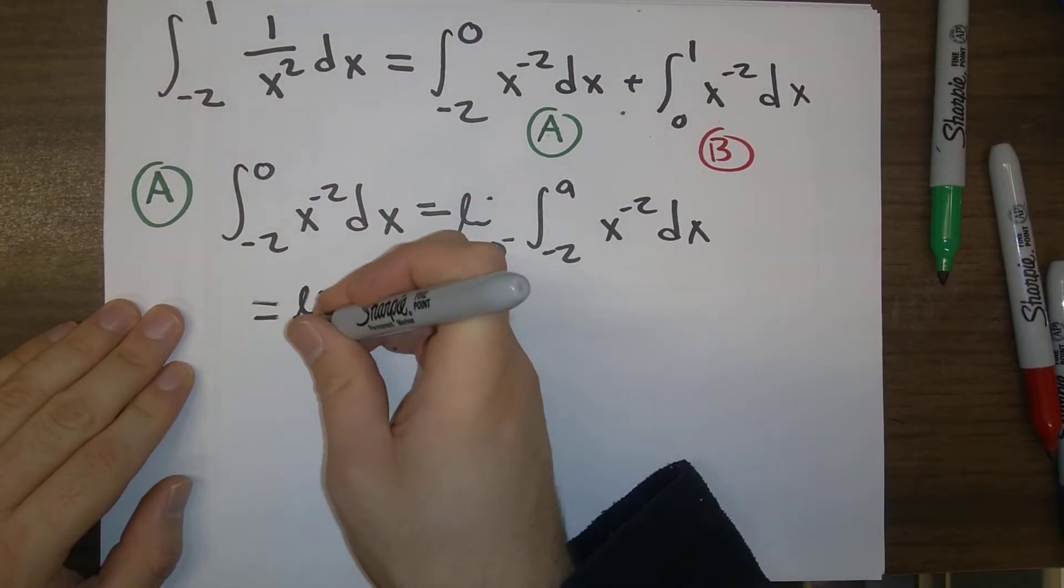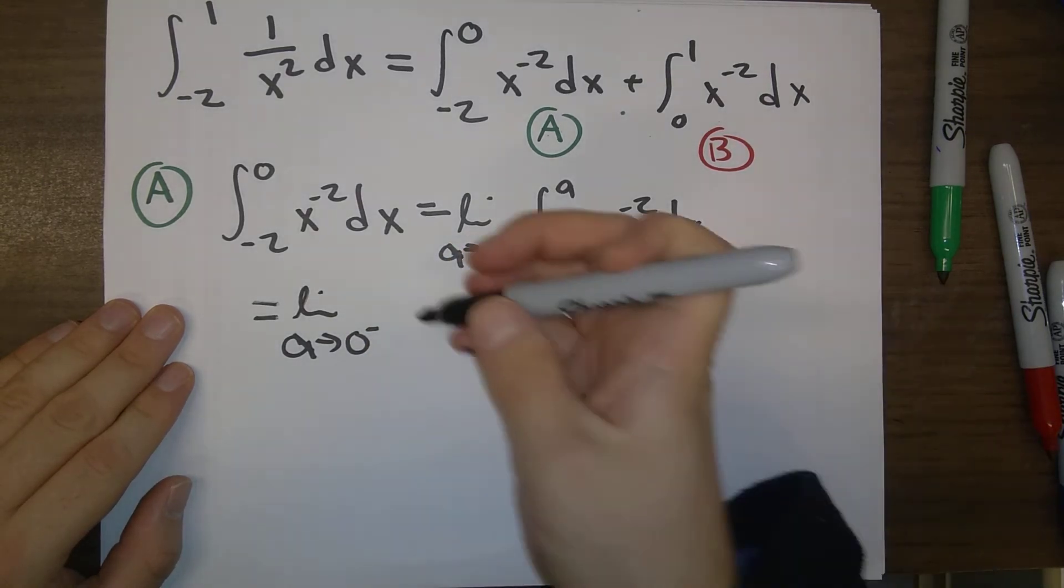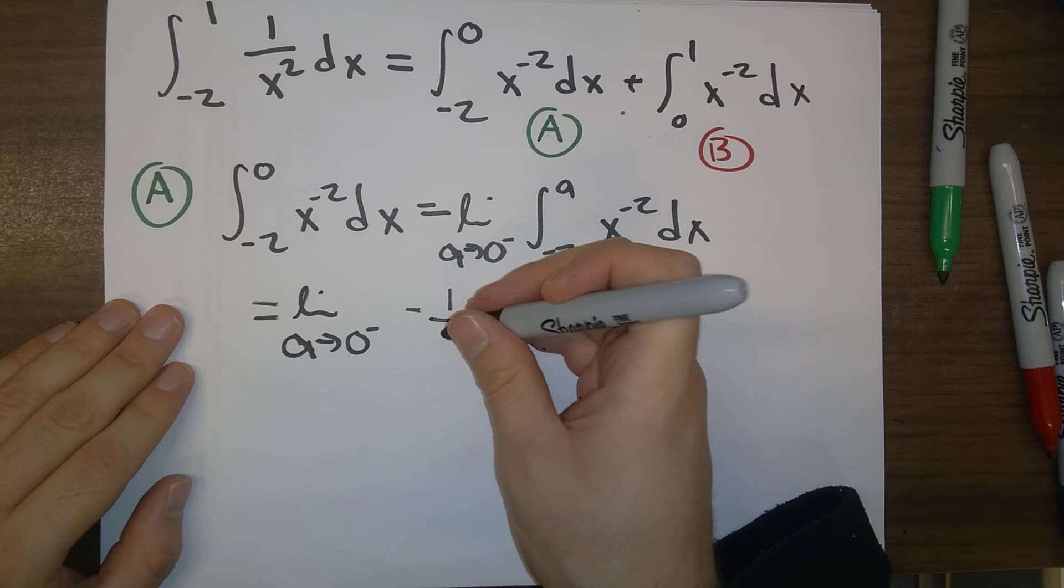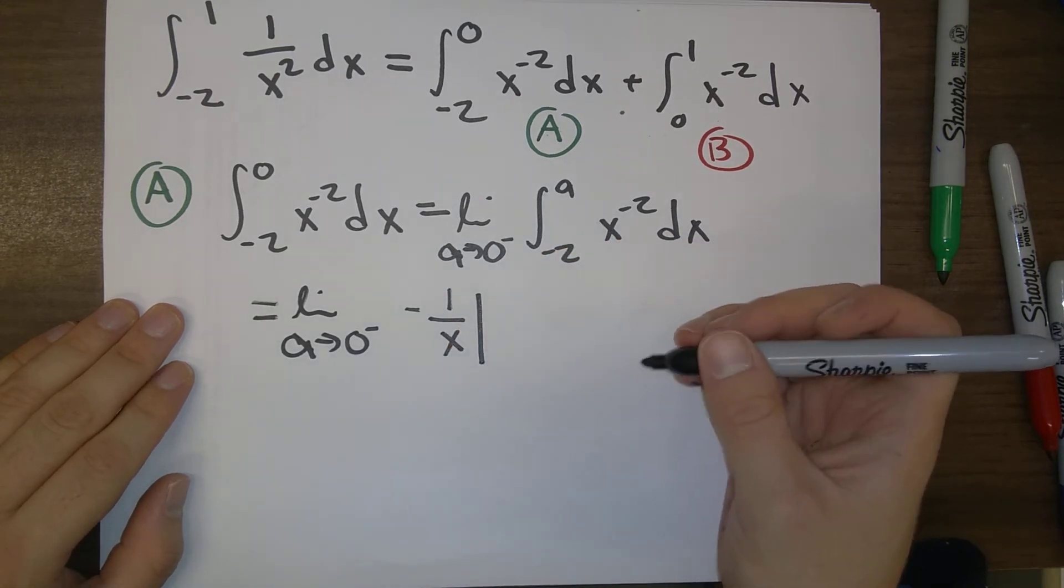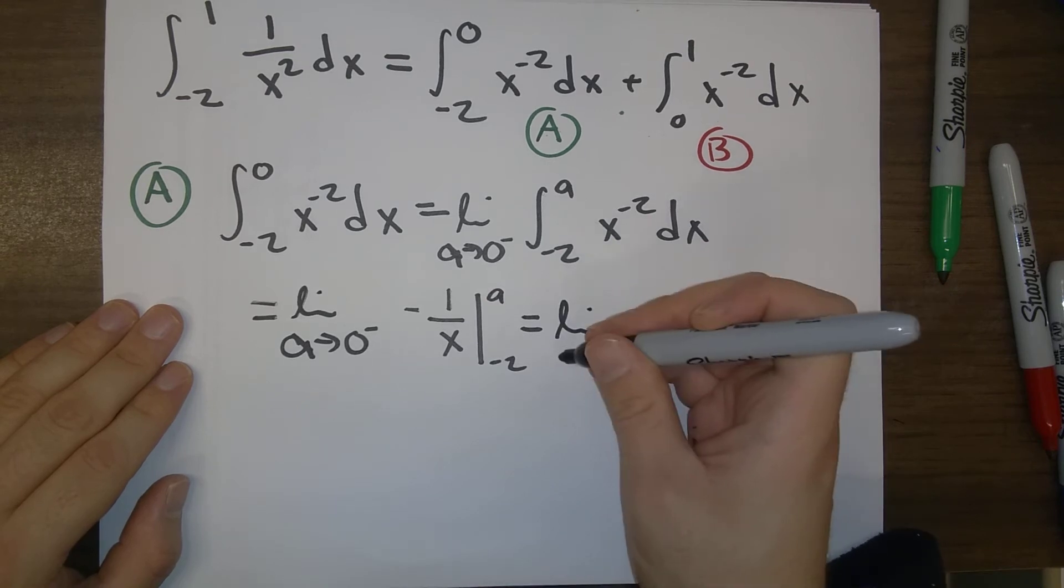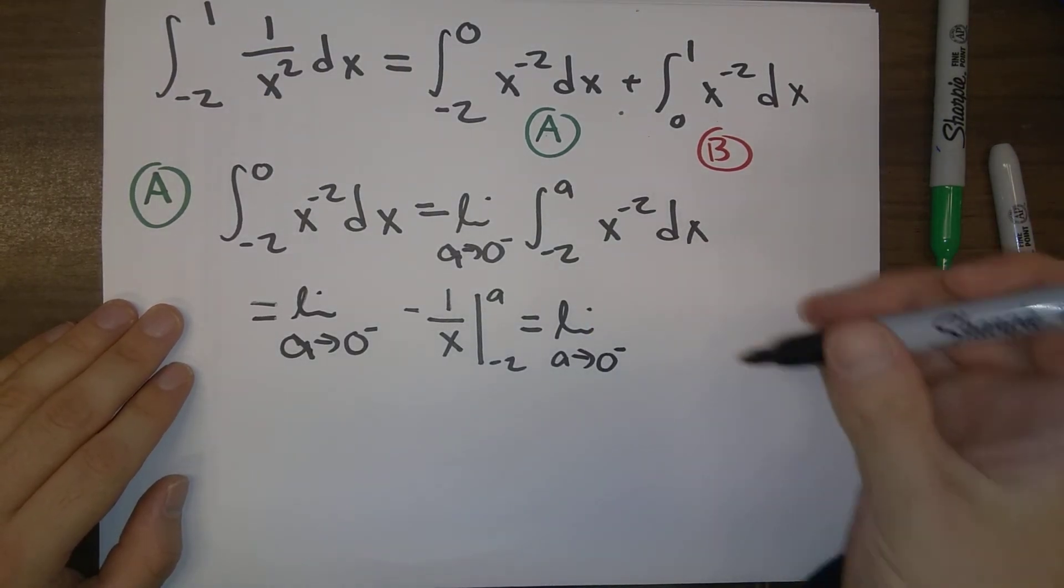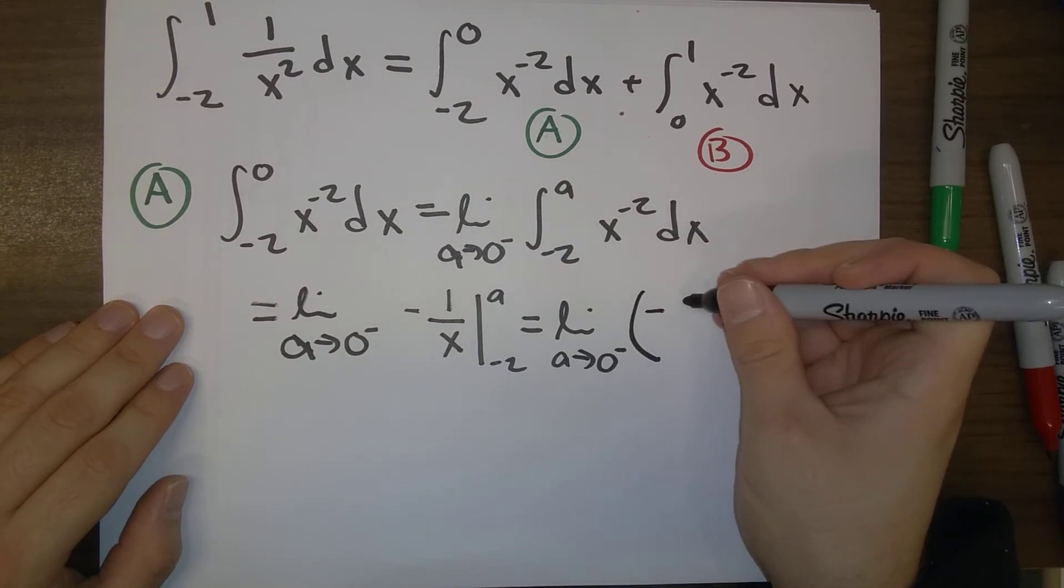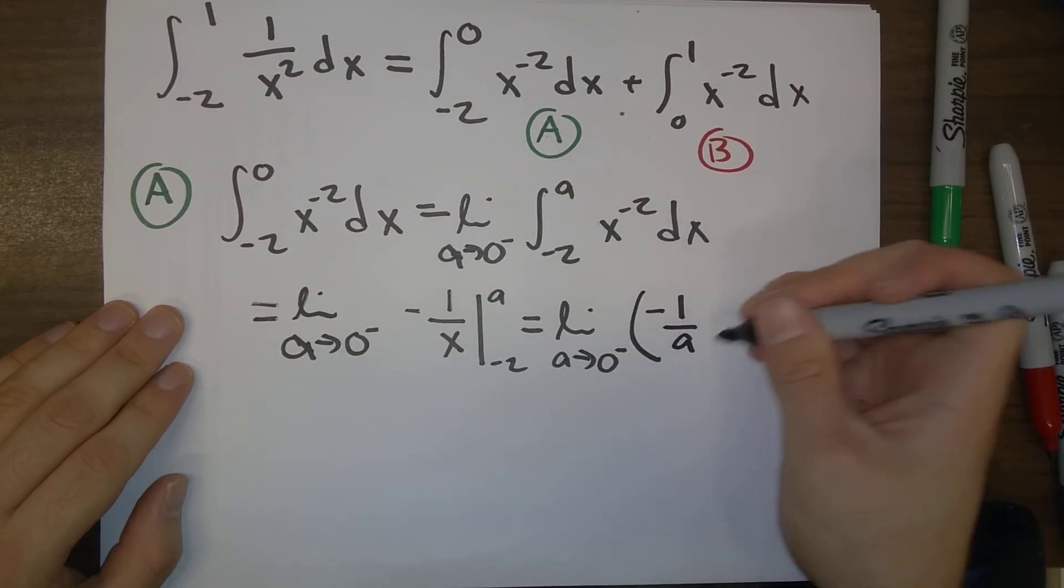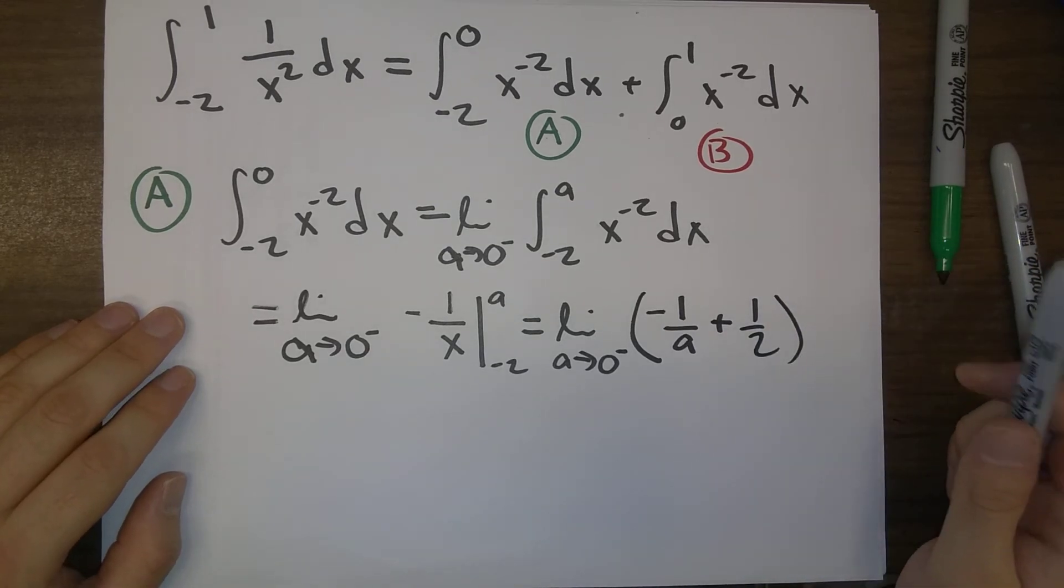Okay, so let's find that antiderivative. Once again, it's going to be minus 1 over x. Plug in minus 2 and A. So again, we get the limit as A goes to 0 from the left of minus 1 over A, and then plus 1 half.